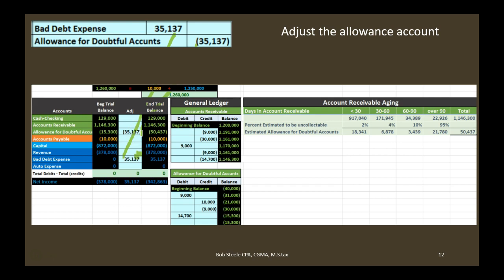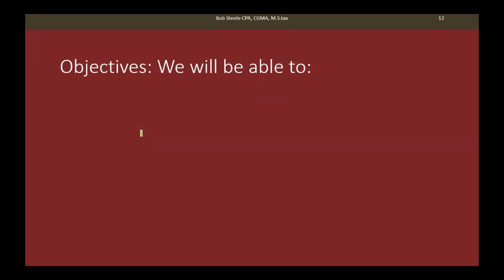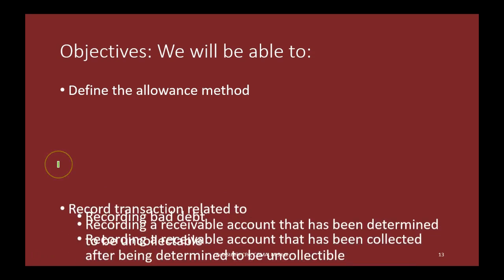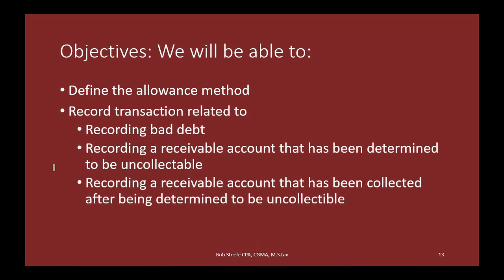We are now able to define the allowance method, record transactions related to recording bad debt, record a receivable account that has been determined to be uncollectible, and record a receivable account that has been collected after being determined to be uncollectible.